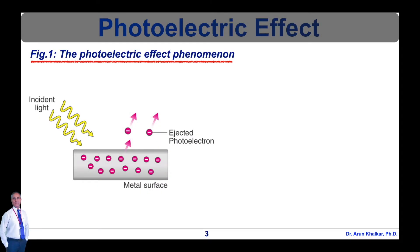The photoelectric effect is a phenomenon in which electrons are ejected from the surface of a metal when light is incident on it. These ejected electrons are called photoelectrons.